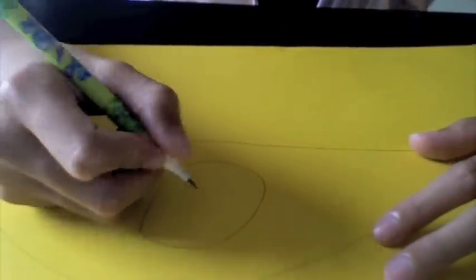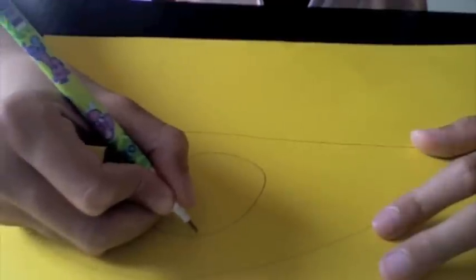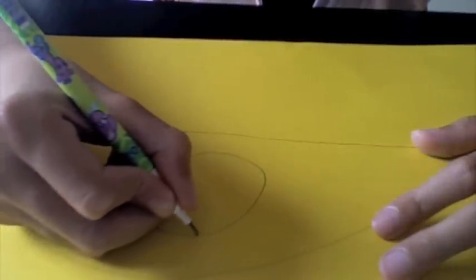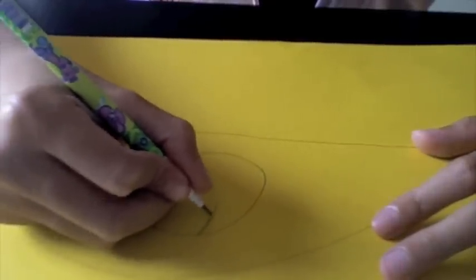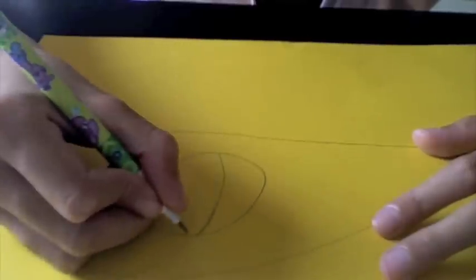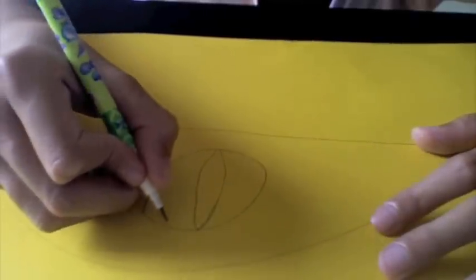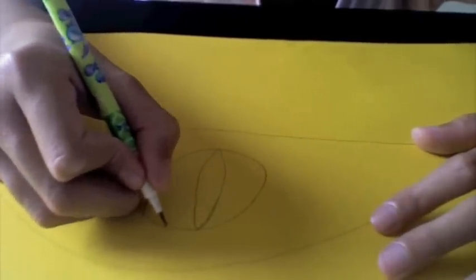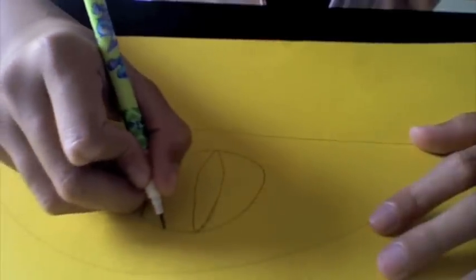The first way, try to make this like a circle, a little circle. Like that. There like this. And then like this.